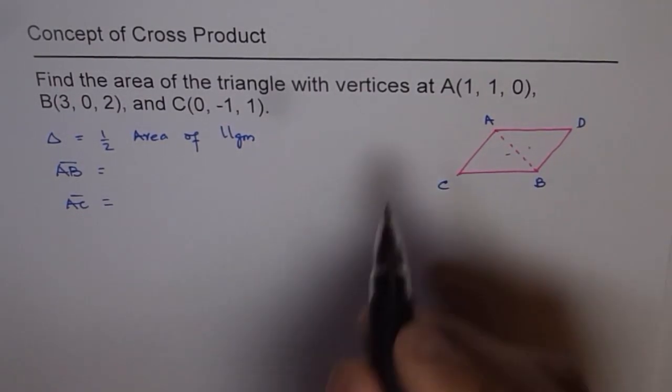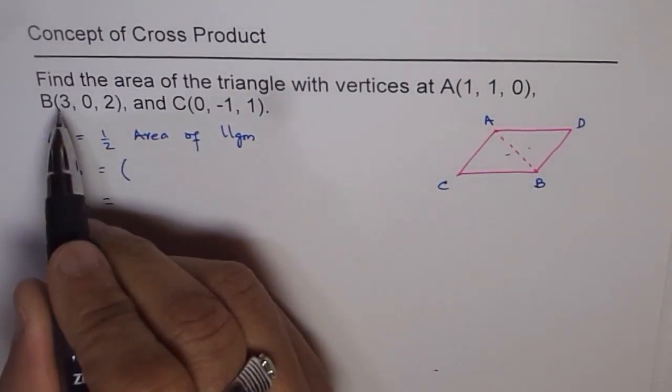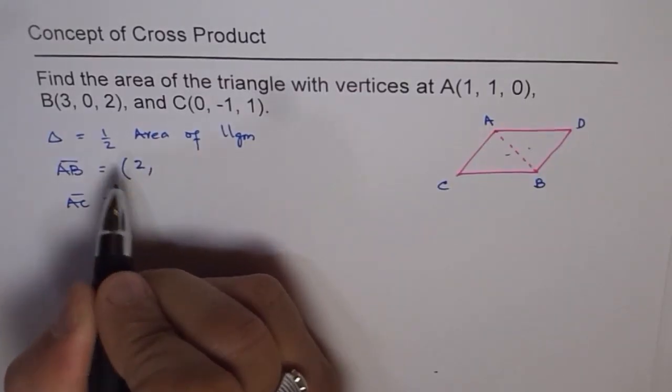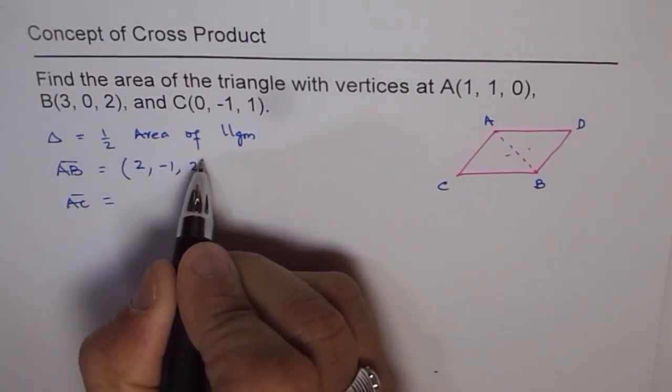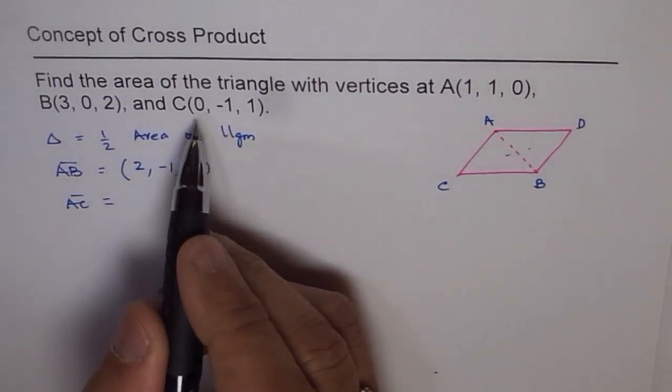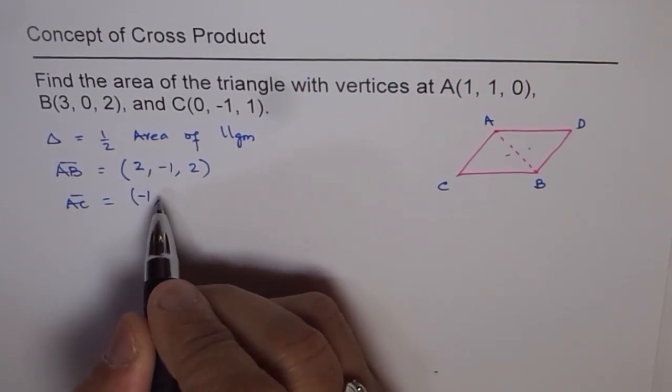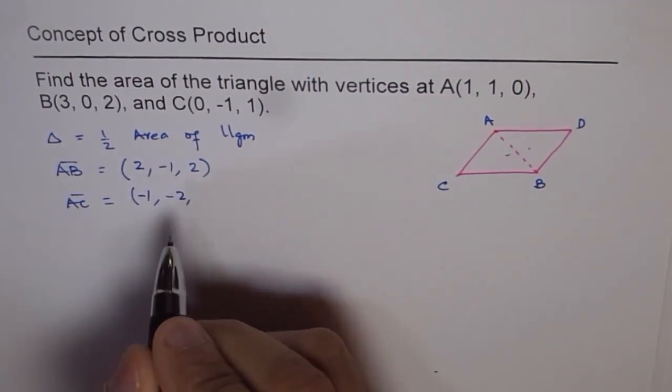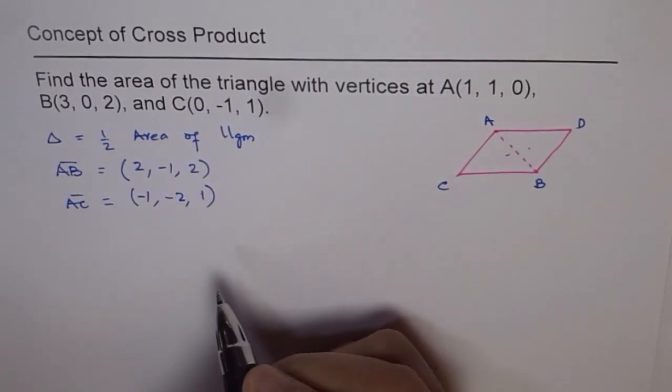Now what is AB? A to B will be 3 minus 1, which is 2, 0 minus 1, which is minus 1, which is minus 2, and 1 minus 0 will be 1. So we get AB and AC.